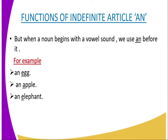When a noun begins with a vowel sound, we use 'an' before it. For example: an egg, an apple, an elephant. So when a noun begins with a vowel, we use the indefinite article 'an'.